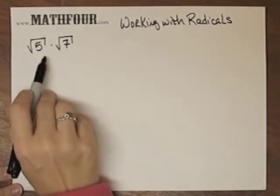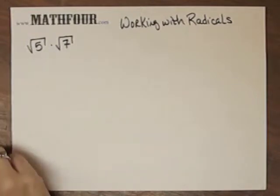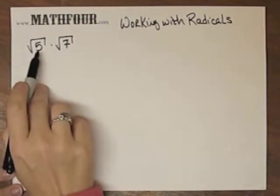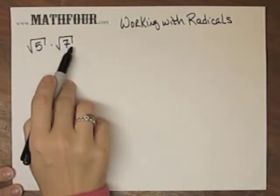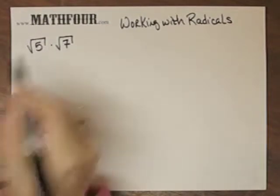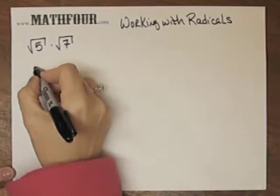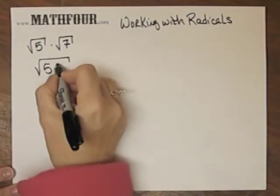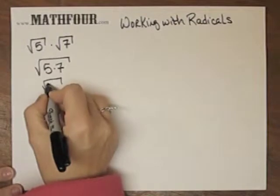So see the little five is under the house and the little seven is under the house. Well because radicals are roots and multiplication are really in the same world, we can put these together. So I can make this square root of five times seven or the square root of 35.